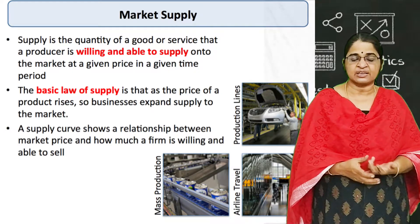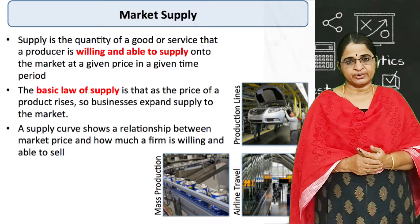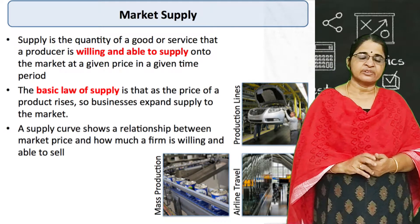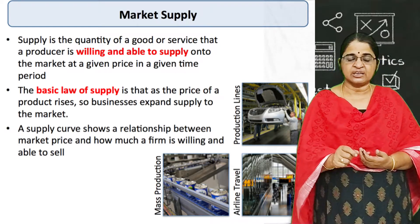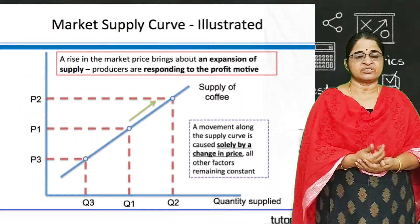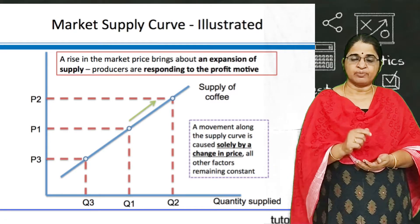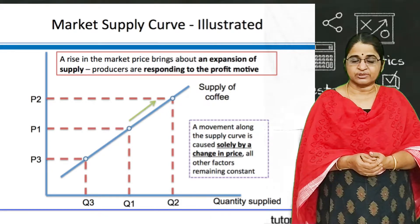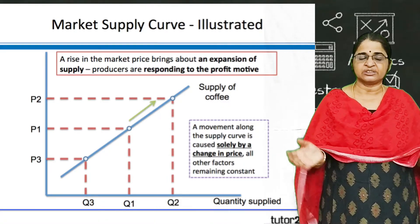Suppose there are three sellers in a market: seller A, B, and C. At price 10 per unit, seller A is ready to sell 100 units, seller B is ready to sell 50 units, and seller C is ready to sell 200 units. When we add together all the quantities supplied by these three sellers we get market supply. Market supply — that is A plus B plus C — is 100 plus 50 plus 200, which is equal to 350. So at rupees 10, the market supply of the commodity is 350.